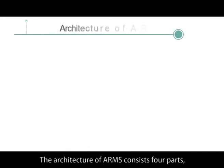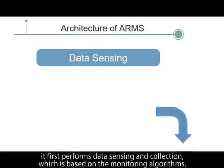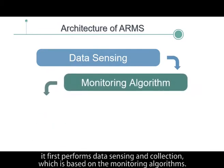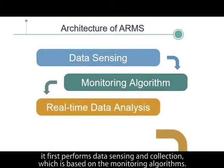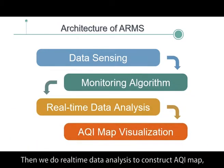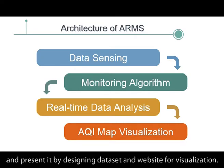The architecture of ARMS consists of four parts. It first performs data sensing and collection, which is based on the monitoring algorithms. Then we do real-time data analysis to construct an AQI map and present it by designing a dataset and website for visualization.